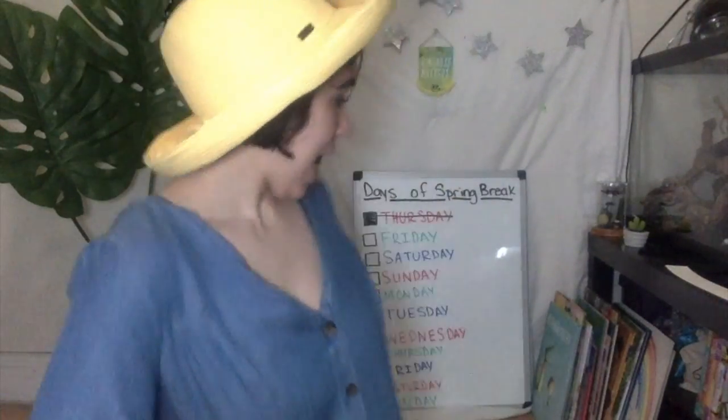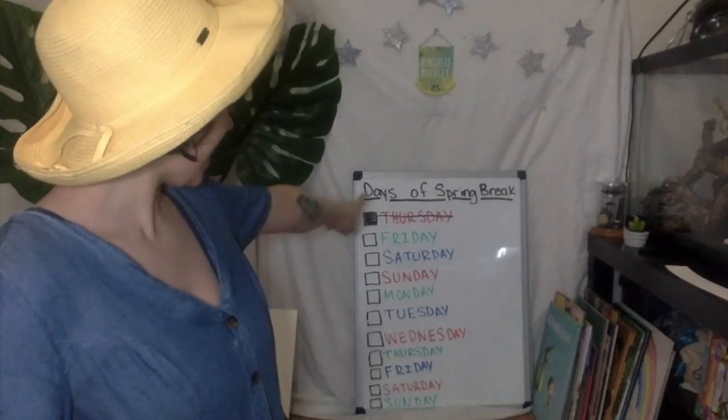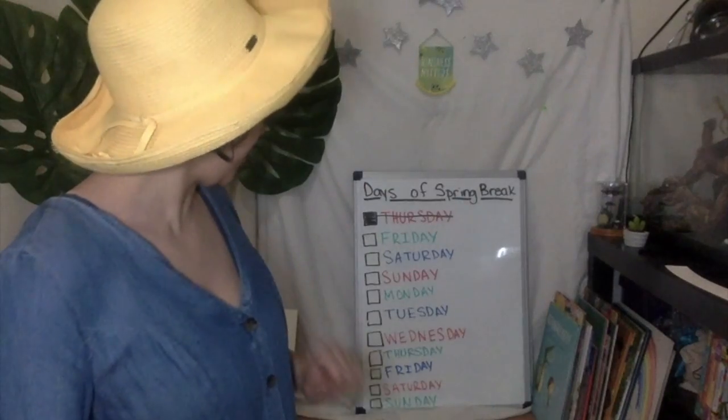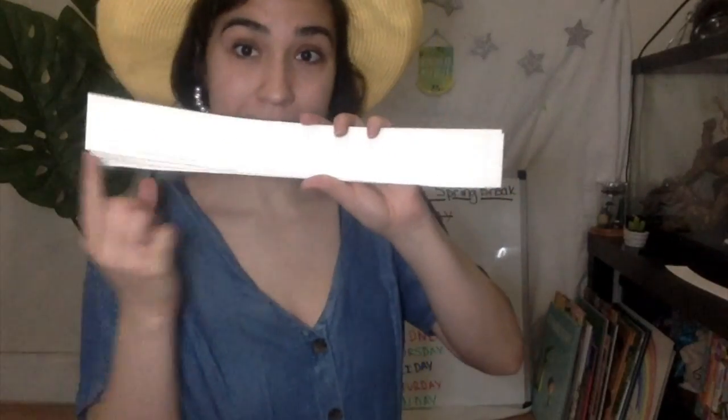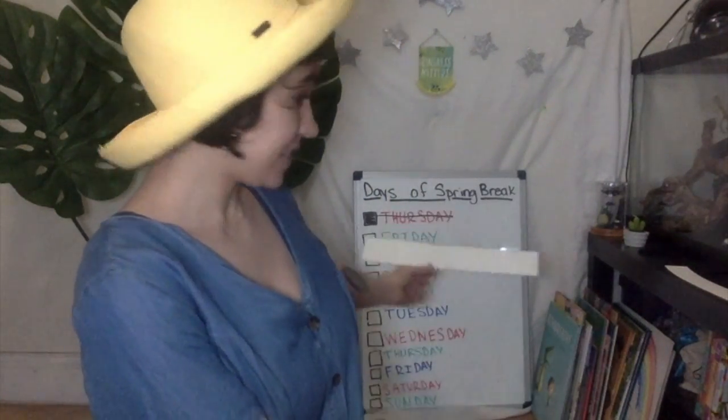And then this 12th one is special — I'm going to put it to the side. I cut up 12 rectangles. I'm going to use the days from my Days of Spring Break poster and write them on each rectangle. One rectangle gets one day. Let's get started.